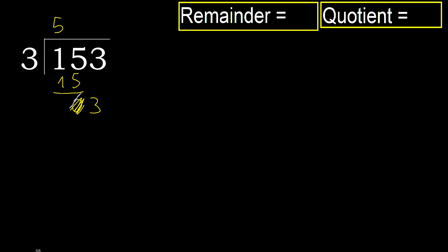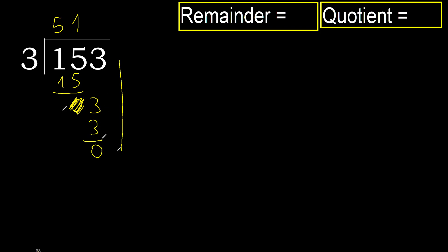Eliminate 0 on this side, bring down 3. 3 multiply by 1 is 3 — is not greater. Subtract 0, next. That is not a number, therefore finish it.